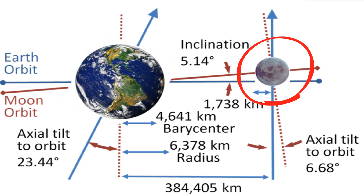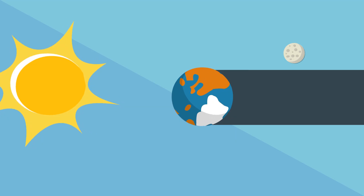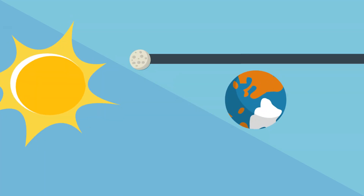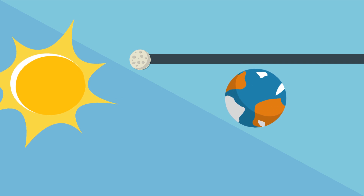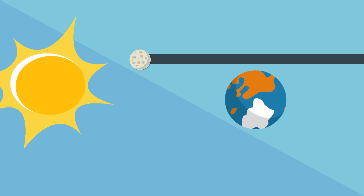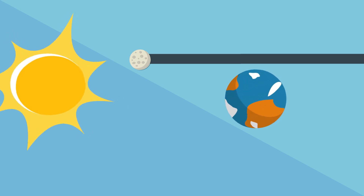This tilt is just enough to place the moon out of the earth's shadow for most full moons, and the earth out of the moon's shadow for most new moons.